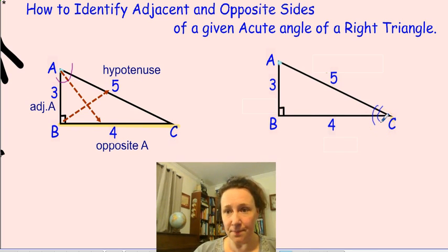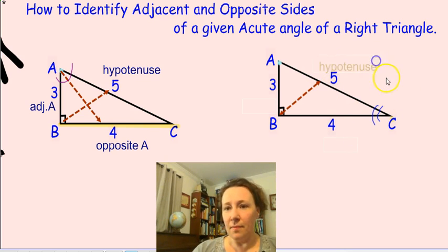this angle with the curve and identify the side opposite to the right angle B. Again, our hypotenuse 5 is AC.